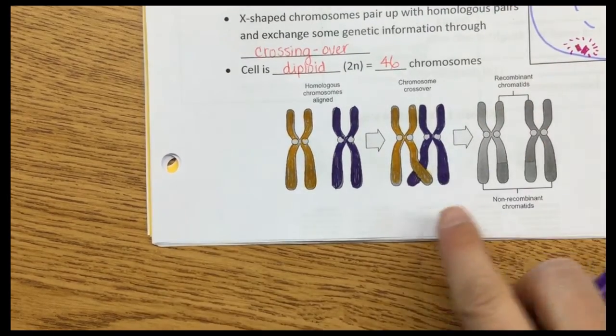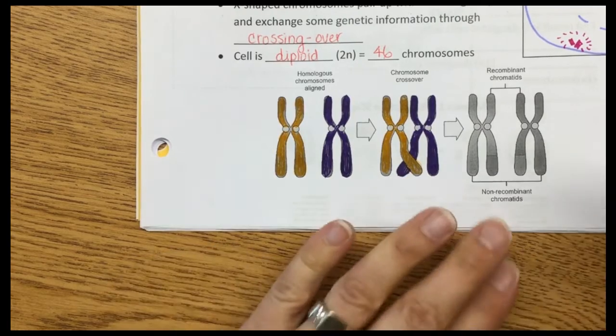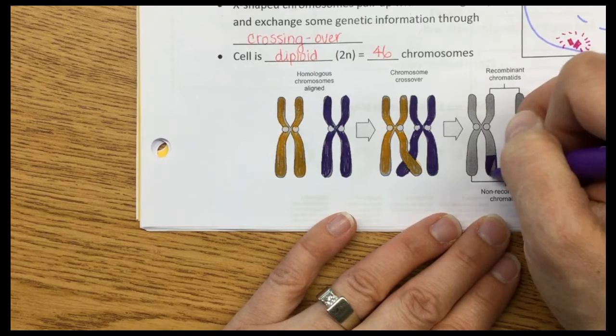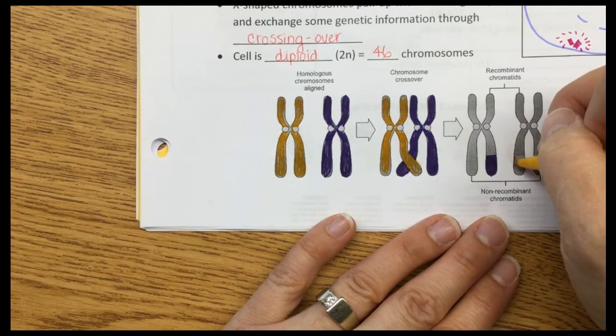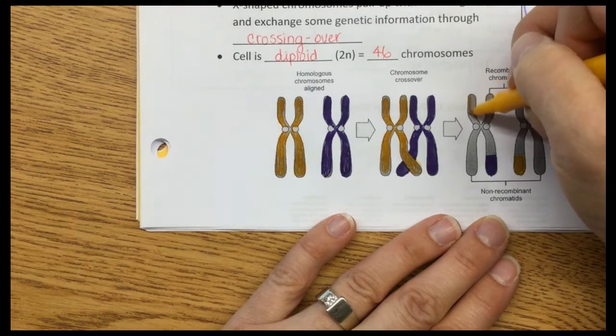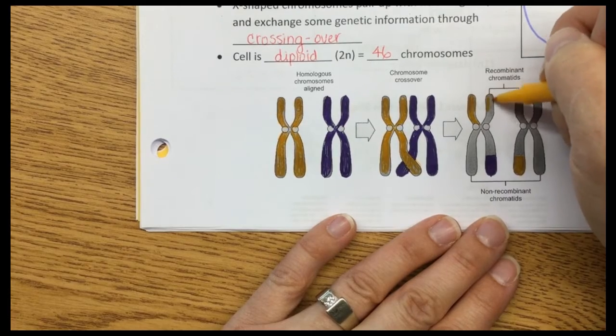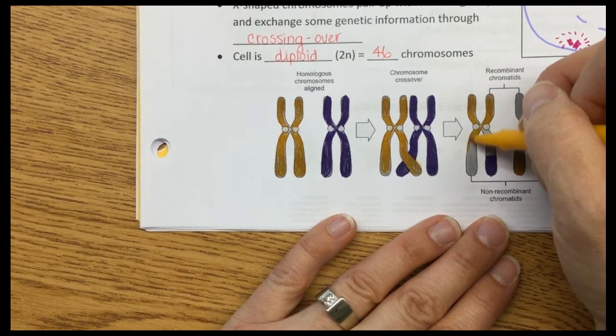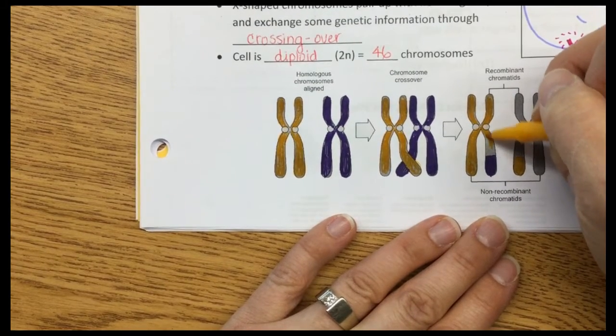See, they're coming together, they're crossing over here. As a result, this homologous x-shaped chromosome has a little bit of the purple, and the purple one has a little bit of the yellow. I'll color the rest of this one yellow. We're just switching one section. In real life, tons of this stuff is switched.